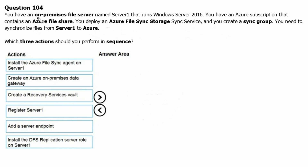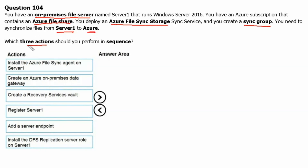You have an on-premise file server named Server1 that runs Windows Server 2016. You have an Azure subscription that contains an Azure file share. You deploy an Azure file sync storage sync service and you create a sync group. You need to synchronize files from Server1 to Azure. Which three actions should you perform in sequence?